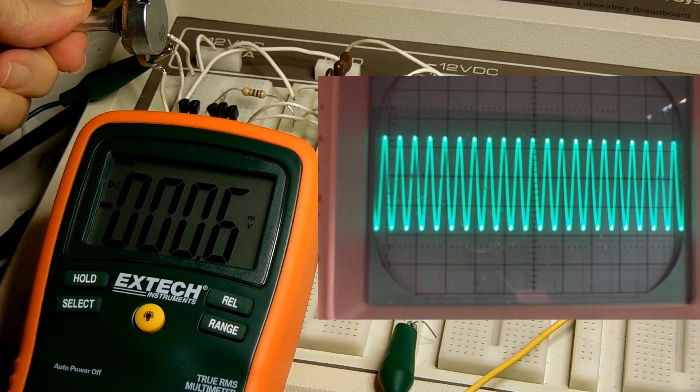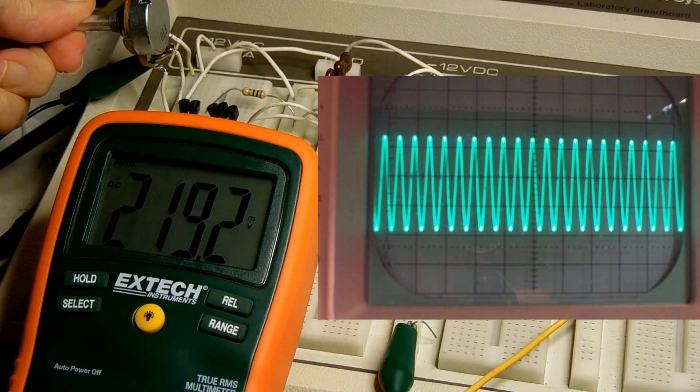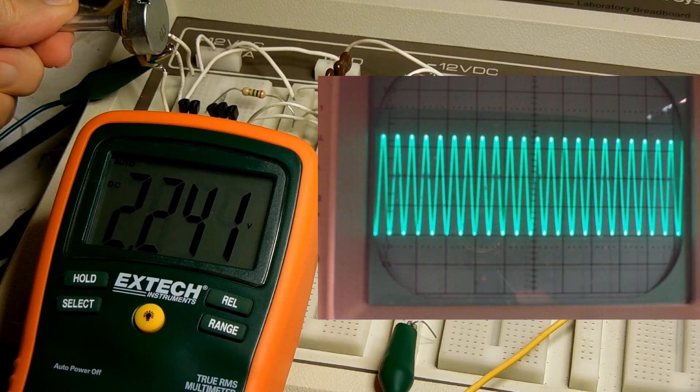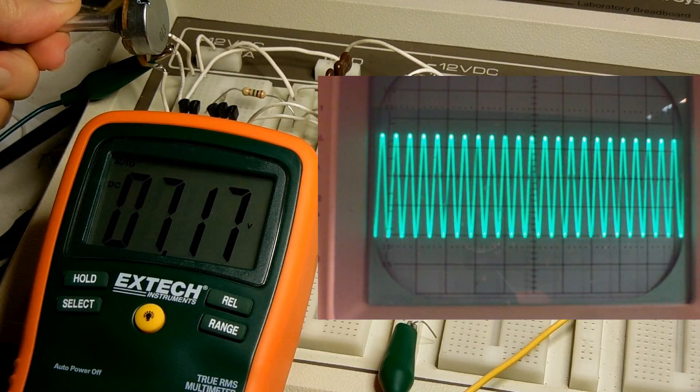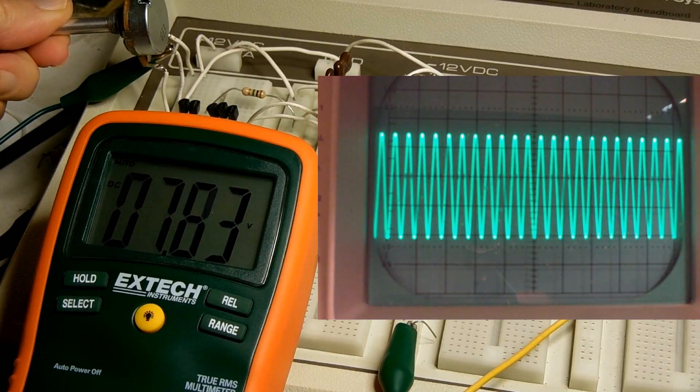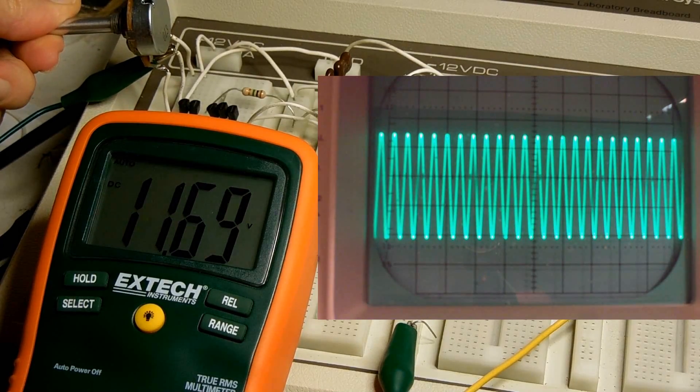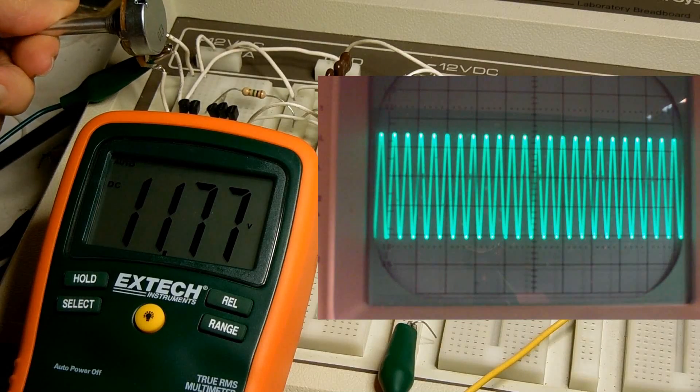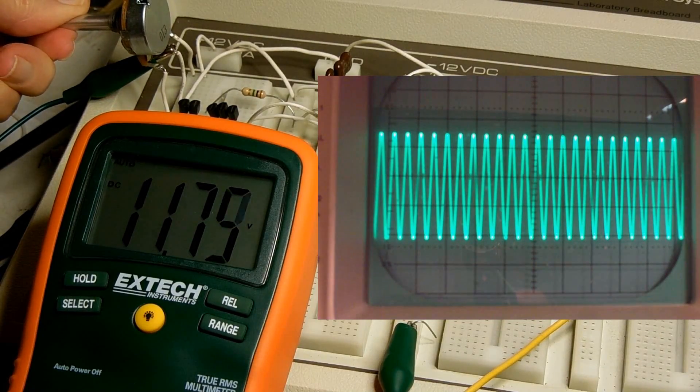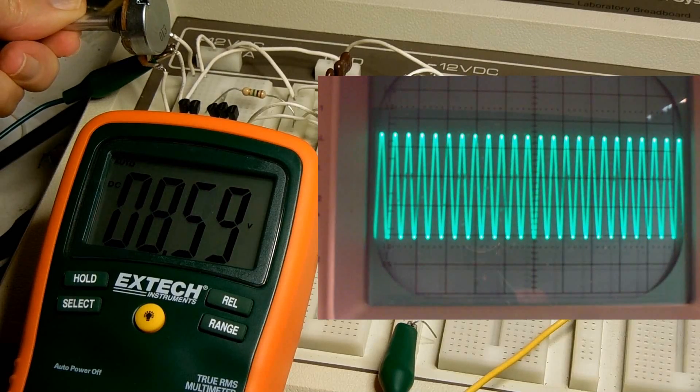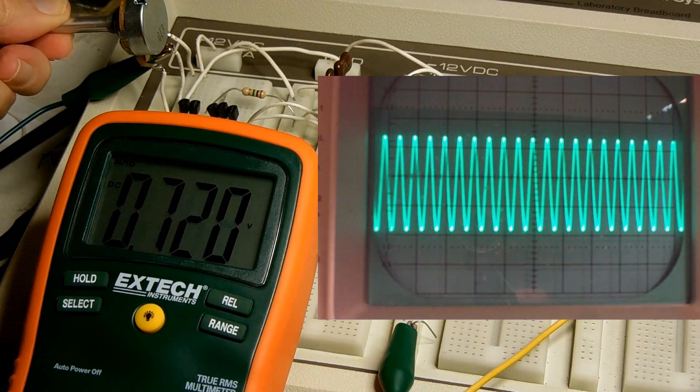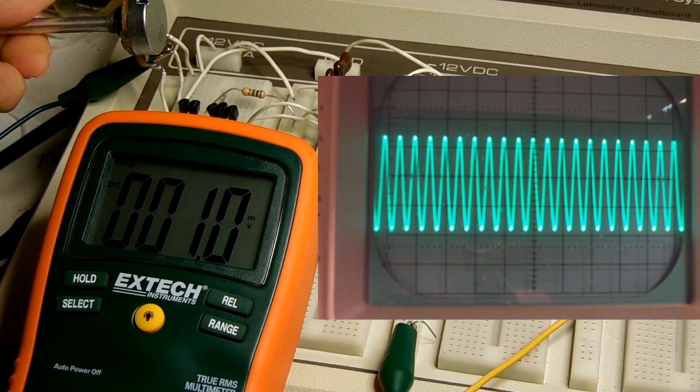Now I'm going to slowly increase the voltage across those varactors and we can see on the scope that the frequency is increasing. And of course when I lower the voltage, the frequency decreases.